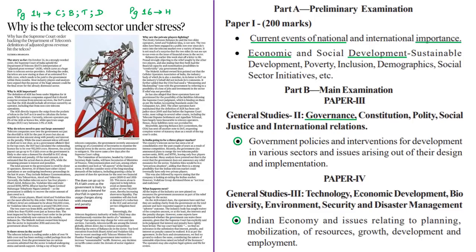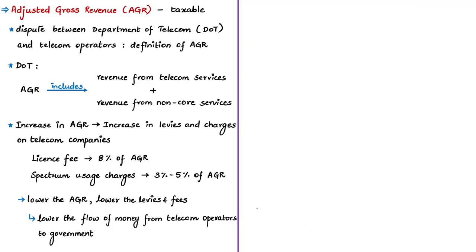The next news article is about Adjusted Gross Revenue (AGR) and its impact on telecom operators because of a recent Supreme Court judgment. Adjusted gross revenue refers to gross revenue after some specific deductions, and this amount is taxable by the government. The issue is between the Department of Telecommunications and telecom operators in India regarding what constitutes adjusted gross revenue. This matter has been in litigation in courts for around 14 years.